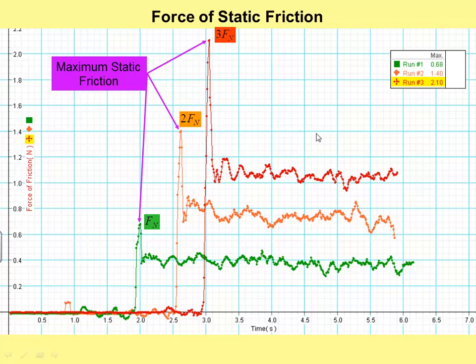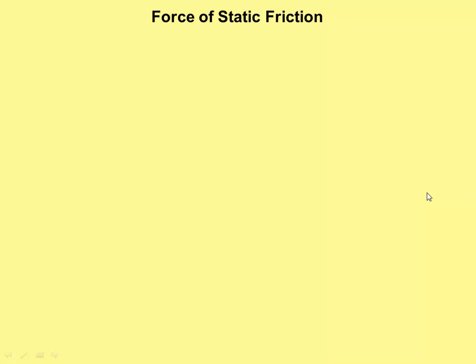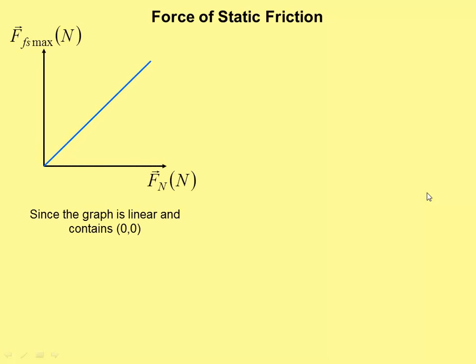Now these are kind of hard to control, which is why I'm doing this one for you instead of having you try to do it in lab. But look at this pattern. So when the normal force was doubled, the maximum static friction required to get it moving was doubled. When the normal force was tripled, the maximum static friction required to get it moving was tripled. So they changed the same way. And that means the graph would be a linear graph going through zero, zero. And so the maximum amount of static friction is proportional to normal force.